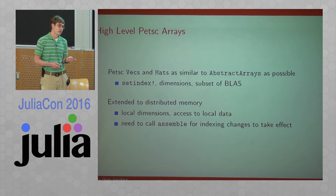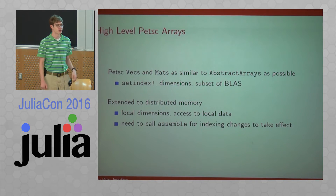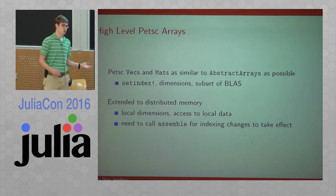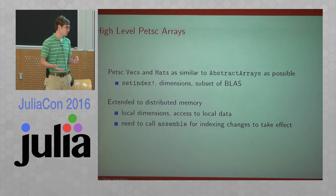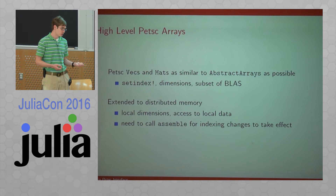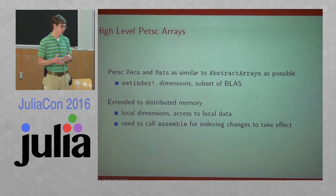The abstraction is that an object refers to the global object — all of it on all processes — so indexing uses global indices and the dimensions you get are the global dimensions. But these are distributed arrays too, so you need additional functionality to expose the distributed nature. There are also ways to get the local dimensions and get objects representing just the local data, which can be more efficient since you know the data is local.